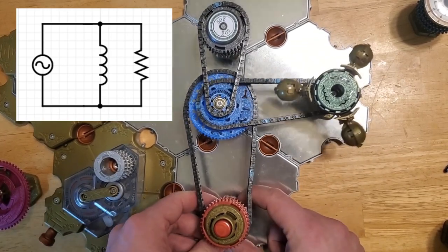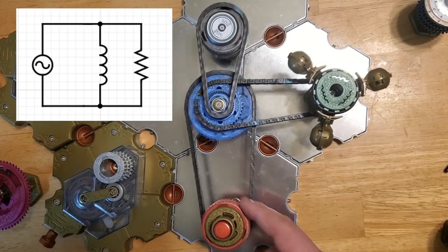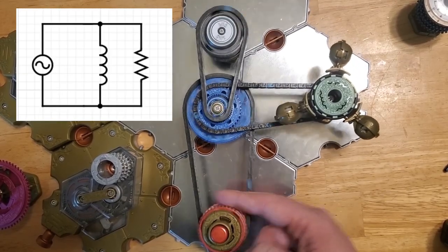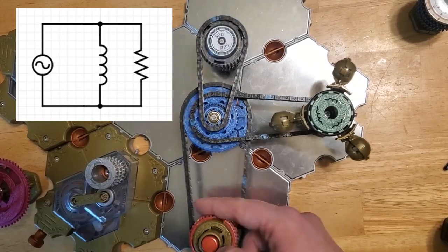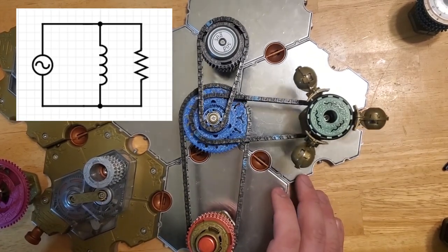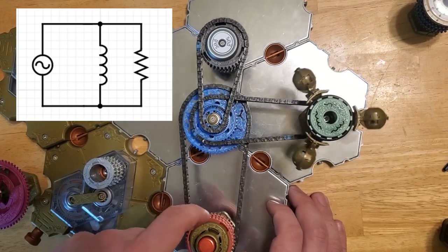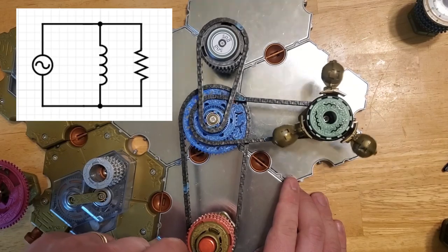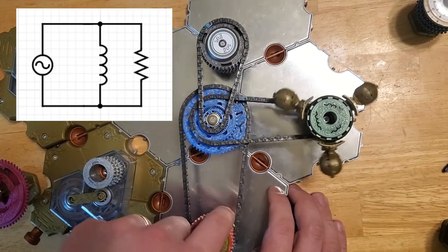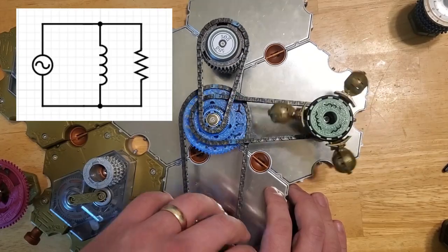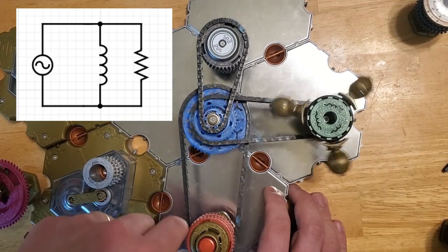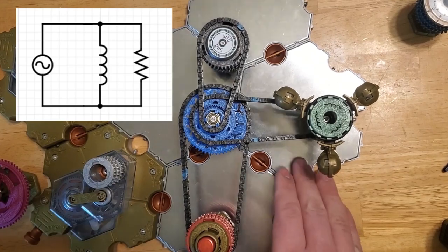So you kind of get the idea of how that works. If I spin my input, this red sprocket, really fast, you can see almost all of the signal, the way I'm moving the chain back and forth, almost all of that movement is translated to my output right there. However, if I move it very slowly, you can see that the inductor eats my signal. And that 50 ohm resistor almost doesn't turn. Which is pretty fun.